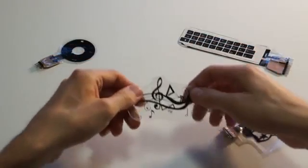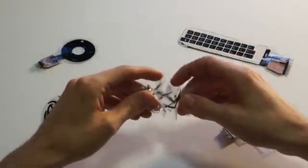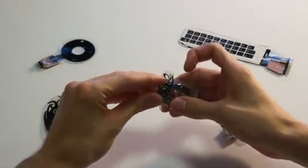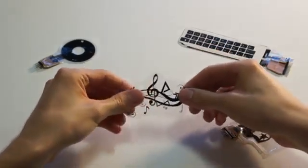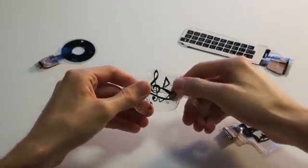It is thin, flexible and stretchable. iSkin can be produced in different shapes and sizes to suit different locations on the body. Moreover, it is visually customizable.